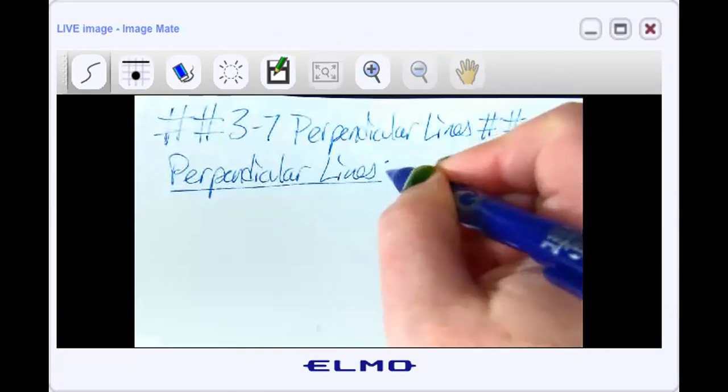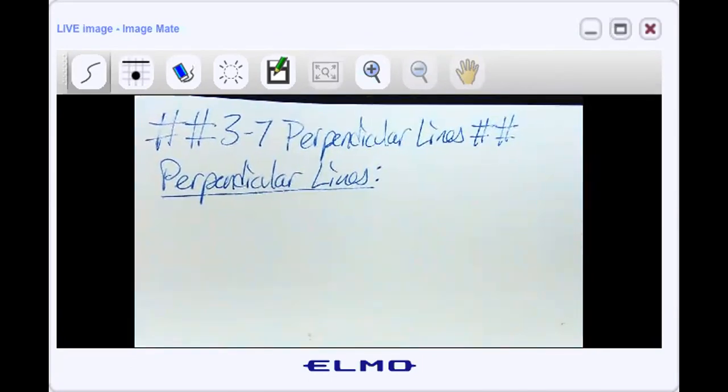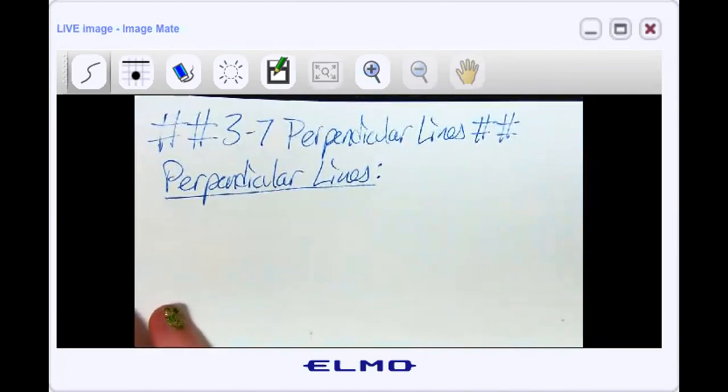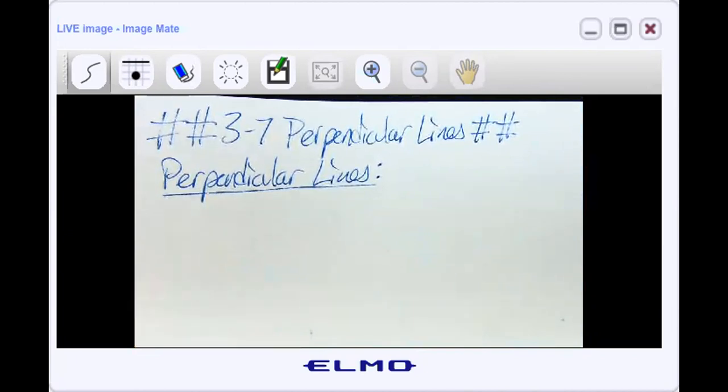They do intersect each other. How? So the thing that has to happen for lines to be perpendicular is that they have to intersect at perfect 90 degree angles. That's what we need. So it has to look perfect, it's got to be spot on, 90 degree angles all the way around. So it can't just be any two lines that intersect. It's got to be intersect at 90 degree angles.